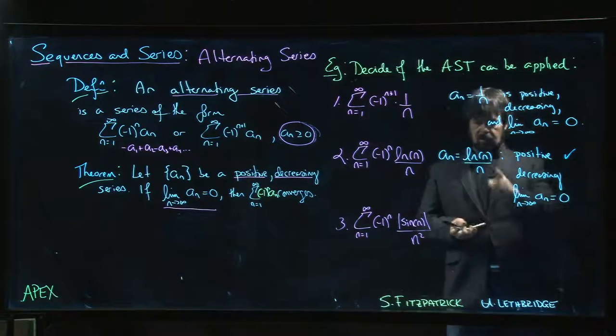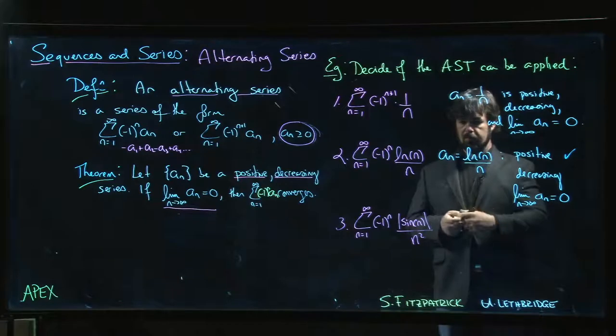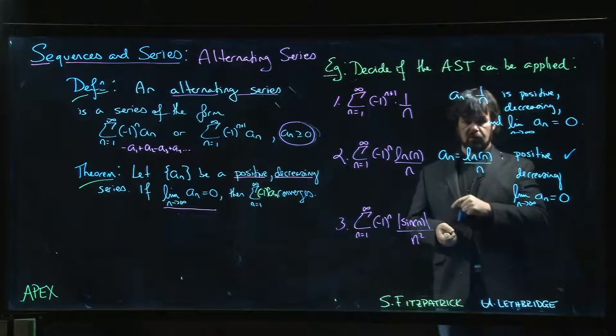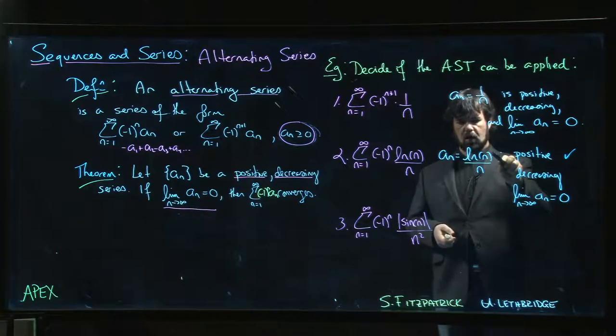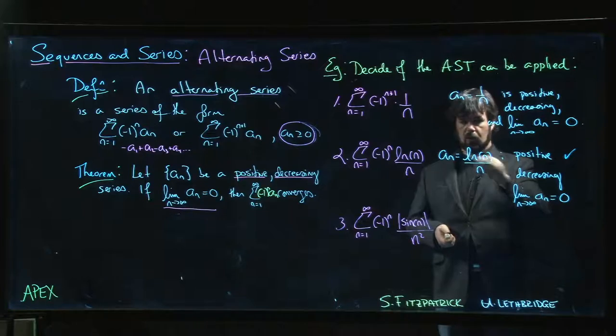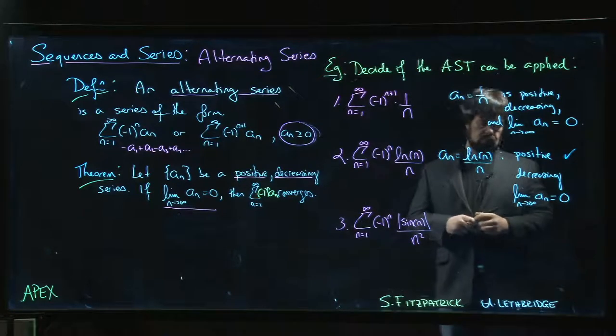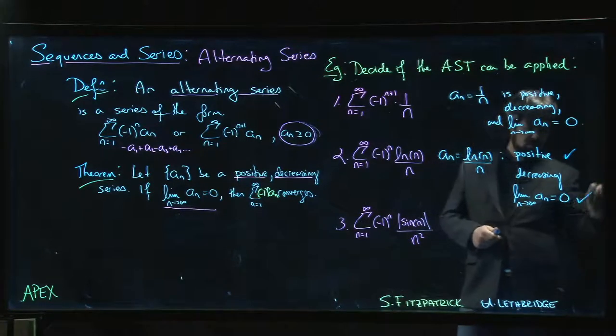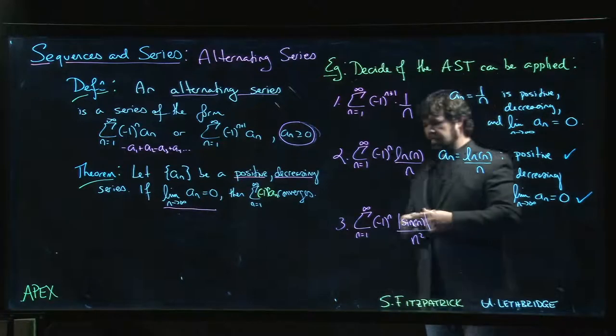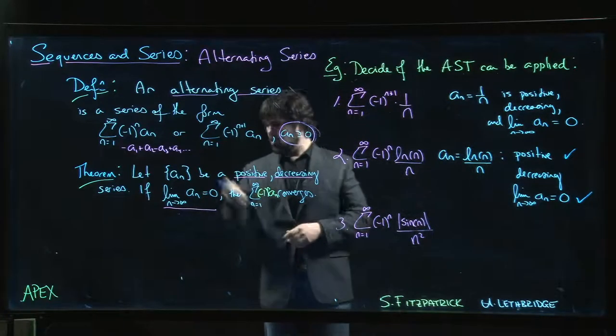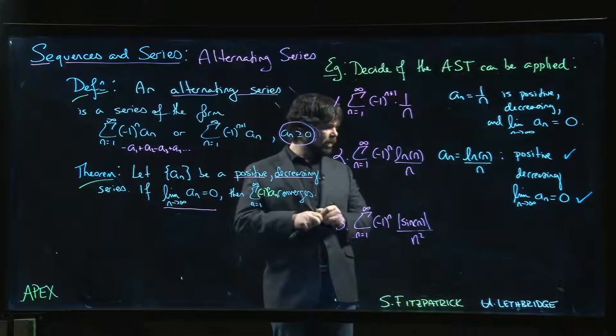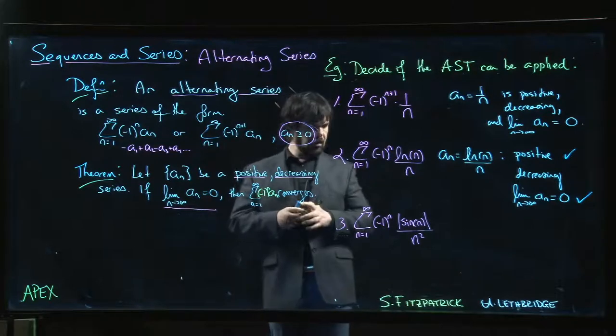Simple application of L'Hopital's rule will tell you that it's infinity over infinity as n goes to infinity. Take the derivative at the top, you get 1 over n, bottom is just 1. That limit goes to 0, check. But it doesn't seem to be decreasing, so you worry that you can't apply the alternating series test.